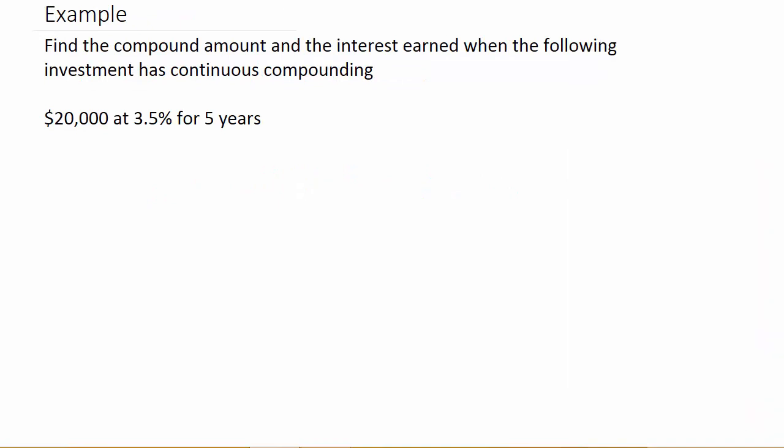It says, find the compound amount and the interest earned when the following investment has continuous compounding. So, it's $20,000 at 3.5% interest for 5 years.